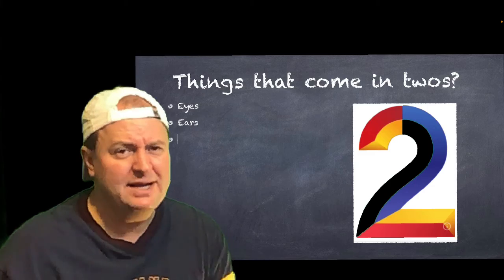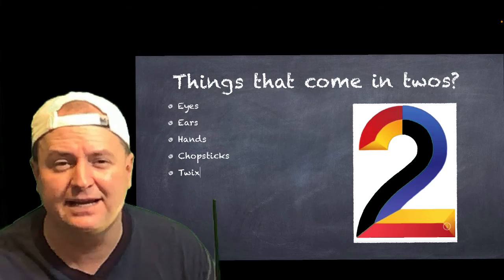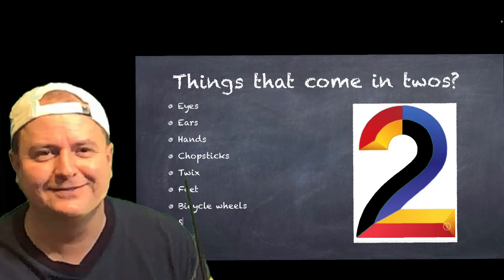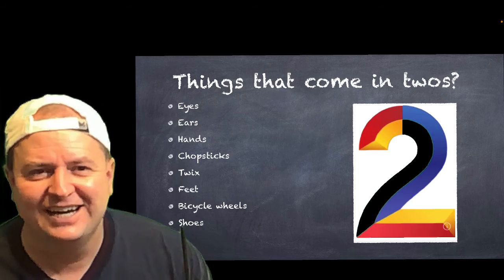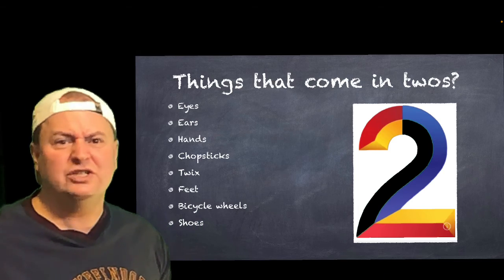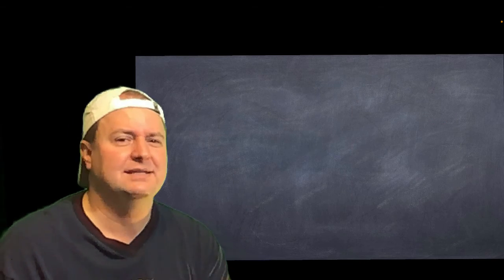One more time, then inscribe. So we have eyes, ears, hands, chopsticks, twigs, left or right, feet, bicycle wheels, and shoes. Who's ever worn one shoe? Not very comfortable, right?